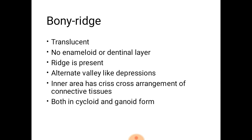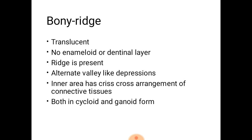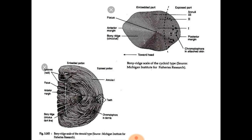The last type is the bony ridge scale. The main features are that they are translucent, no enameloid or dentinal layer is present, ridges and alternate belly-like depressions are present, and the inner area has a crisscross arrangement of connective tissues. They are present in both cycloid and tenoid forms. In the upper diagram you can see the cycloid type and in the lower diagram the tenoid type.